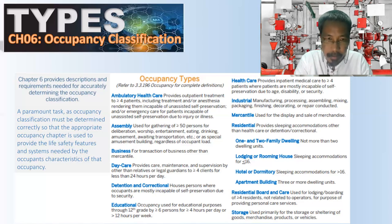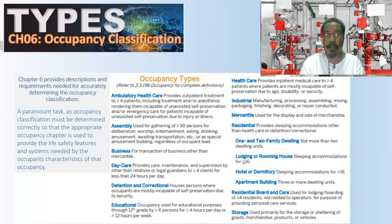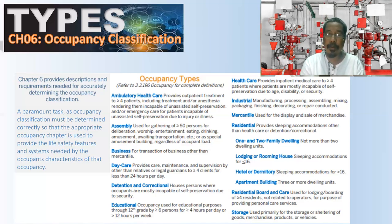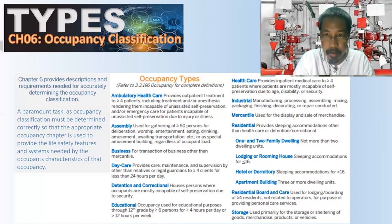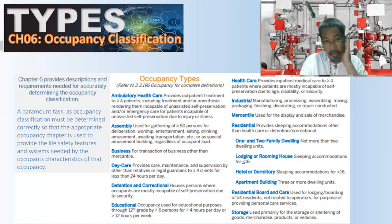Assembly occupancy is used for the gathering of 50 or more persons for deliberation, worship, entertainment, eating, drinking, amusement, awaiting transportation, or as a special amusement building regardless of occupant load. Examples include a church, where 50 or more persons gather, and a theater, where 50 or more persons are watching a movie — that is also an assembly occupancy.